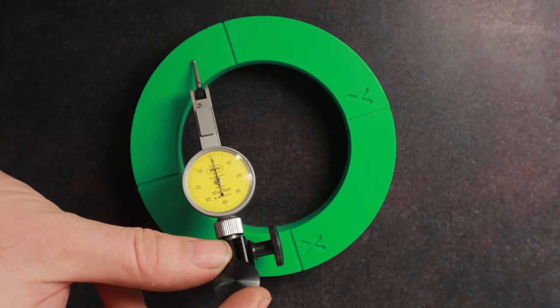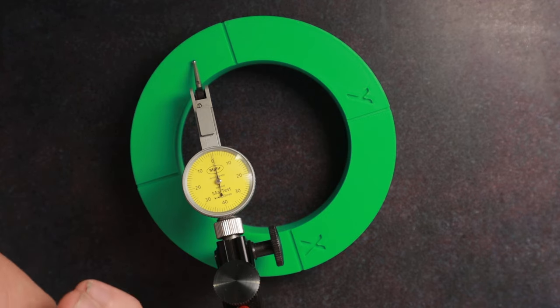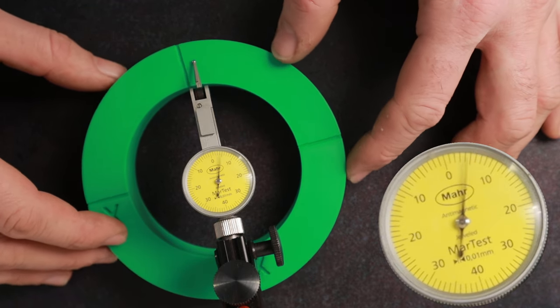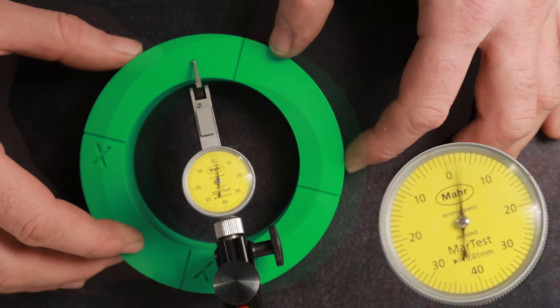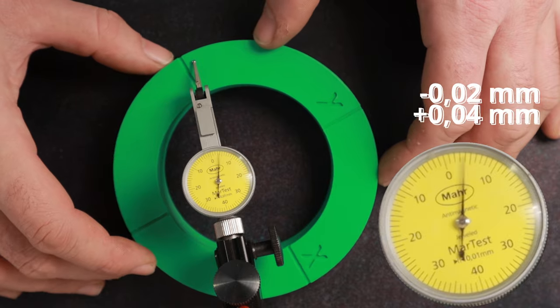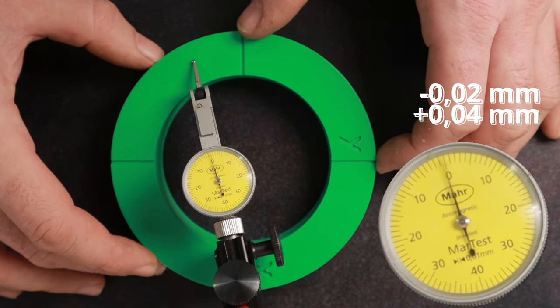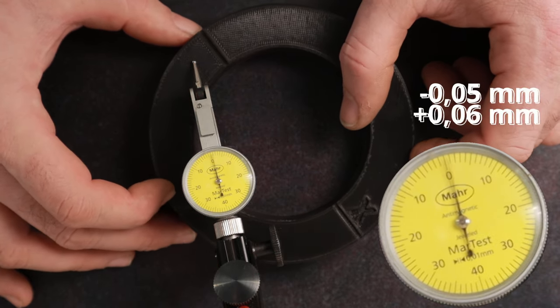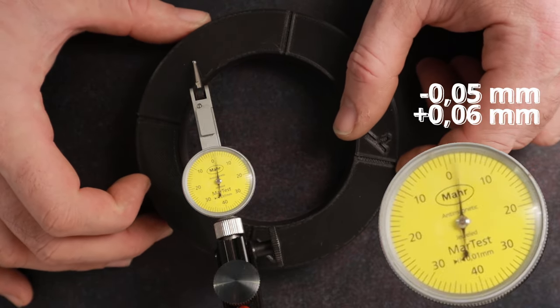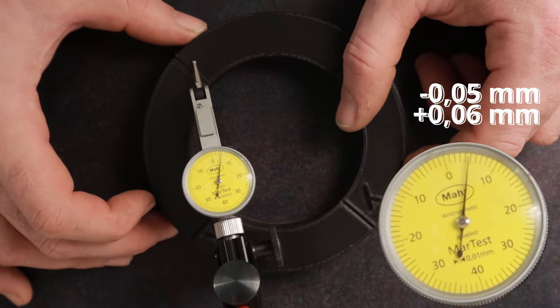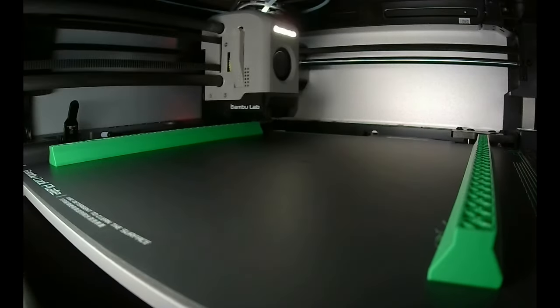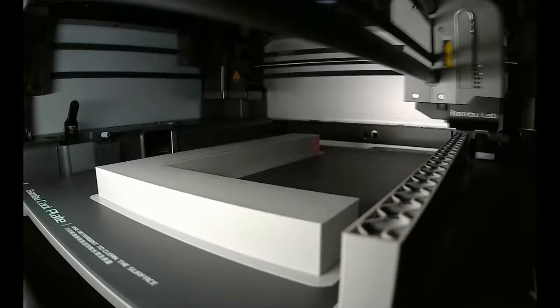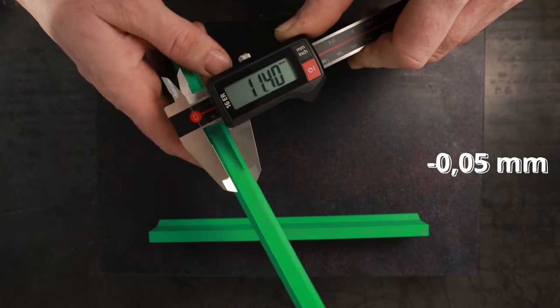I also checked the flatness of the top surface with a surface plate and dial indicator. I did the same for the part printed by the Ender and the result is 0.11 millimeters. Some additional prints to see how parallel the printed surface could be and also how perpendicular the XY-axis are. I took the dimensions and checked the top layer flatness.